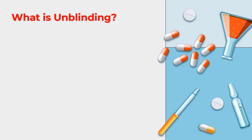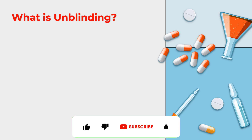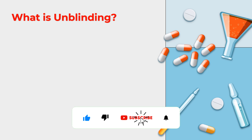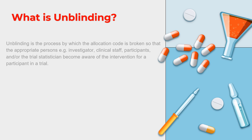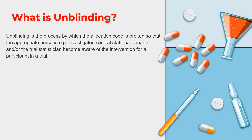Now let us understand what exactly unblinding is. As the name suggests, once you have hidden a particular treatment group or what you are giving to a research participant, whenever that needs to be revealed, we call it unblinding. Unblinding is a process where the allocated code or treatment is broken so that the appropriate person — whether the investigator, clinical staff, participants, or even the trial statistician — becomes aware of the intervention given to the study participant.